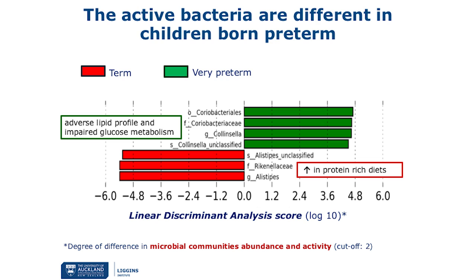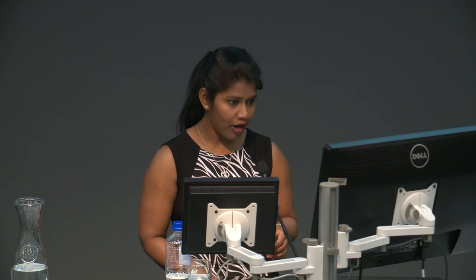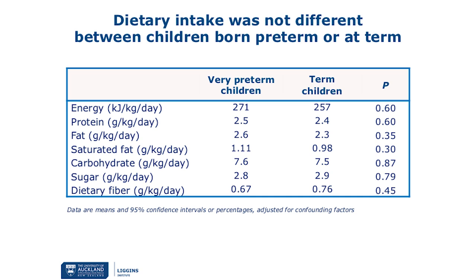We then looked at the active bacteria in these children. The bacteria highly present in preterm children are shown in green bars, and those highly present in the term group in red bars. The preterm group had a higher number of certain collincellar species and related species associated with adverse lipid profile and impaired glucose metabolism. Some species highly present in the term group are associated with protein-rich diet. When we examined dietary parameters, we could not see any difference between the two groups.